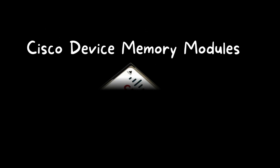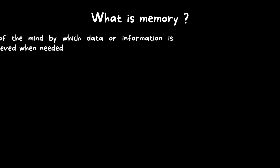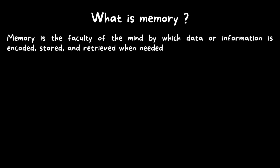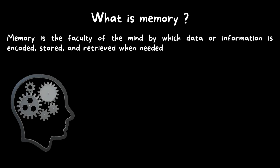Cisco Device Memory Module. Memory is the faculty of the mind by which data or information is encoded, stored, and retrieved when needed. Memory is like a human brain — it is used to store information and retrieve it whenever necessary. Just as memory is important for a human being, it is equally important for all electronic devices.